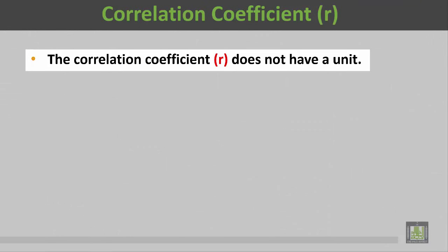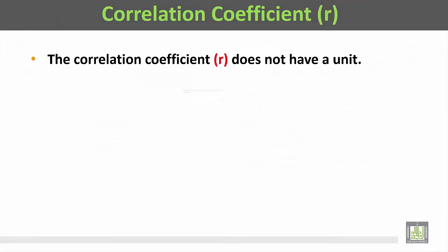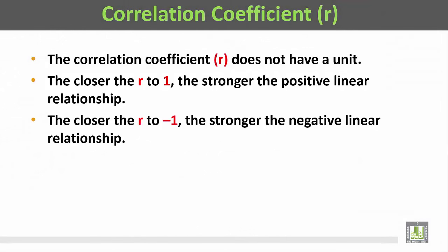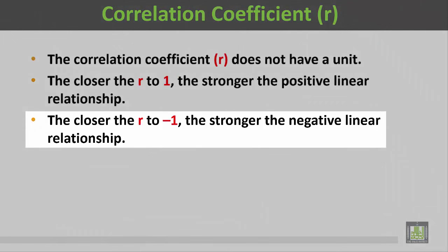The correlation coefficient R does not have a unit. The closer R is to 1, the stronger the positive linear relationship between the two quantitative variables.